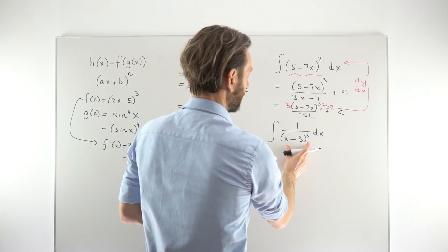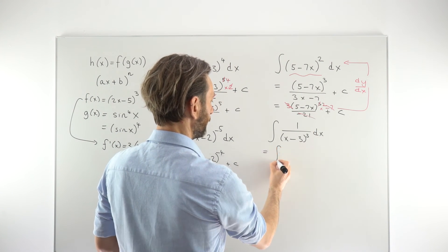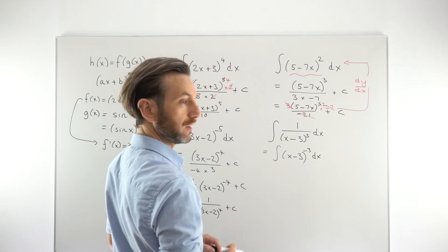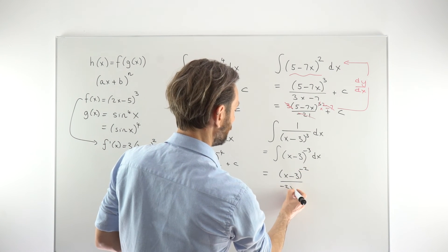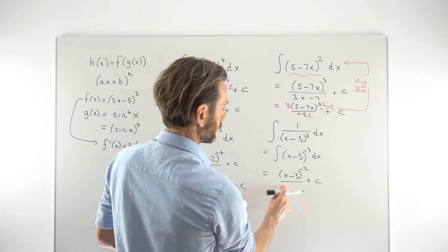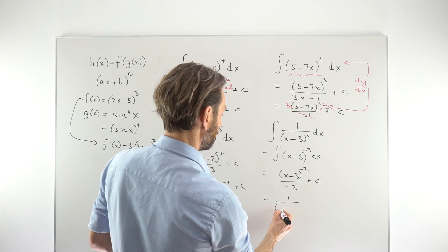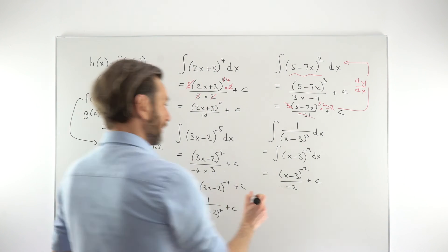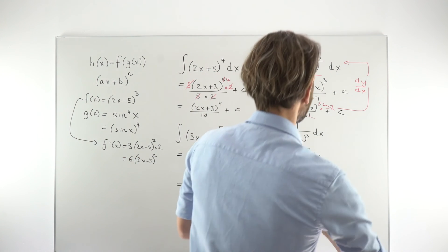The final example isn't quite in an integratable form because the variable term is on the bottom of the fraction. So first, bring that bracket to the top and make it a minus 3 power using your indices rules. Then proceed with the reverse chain rule: increase the power by 1, divide by the new power minus 2, times the derivative of the inside which is just 1 — so it doesn't change anything. That gives minus 1 over 2 times (x minus 3) to the power of 2 with a positive exponent, plus C.